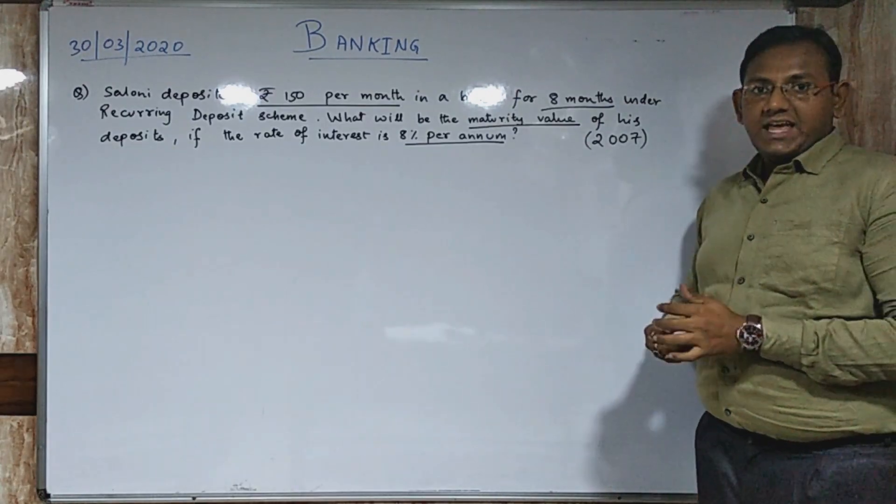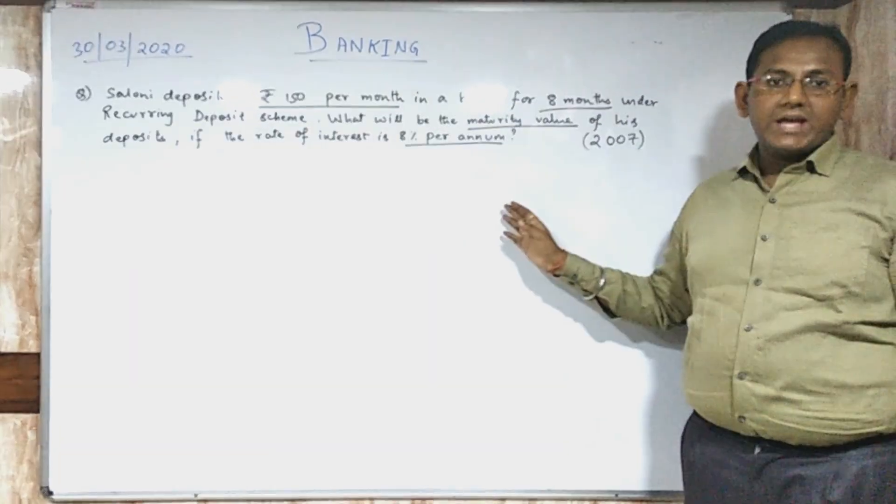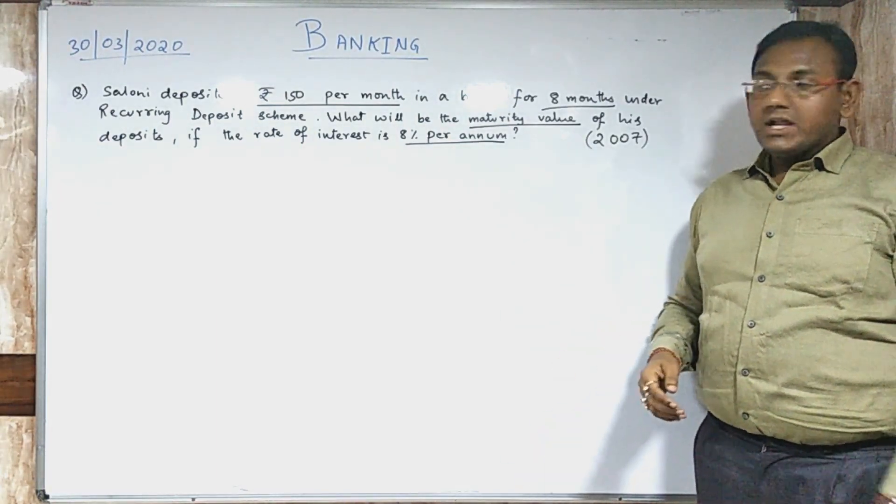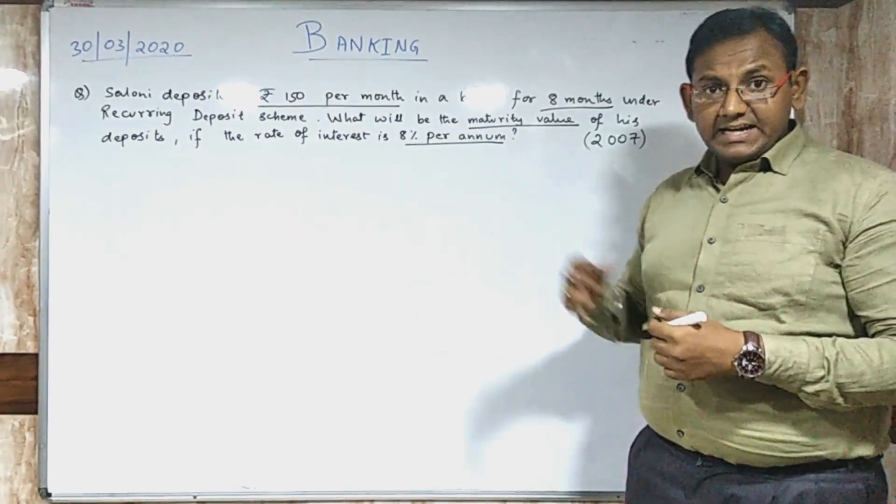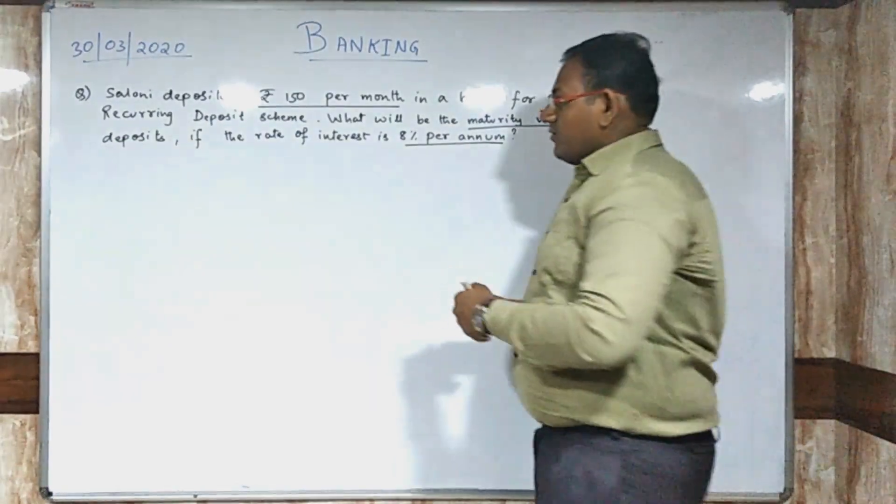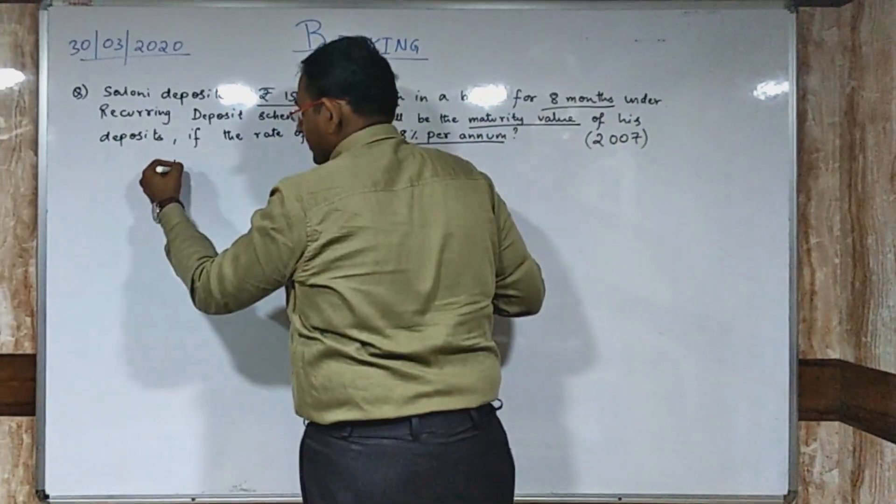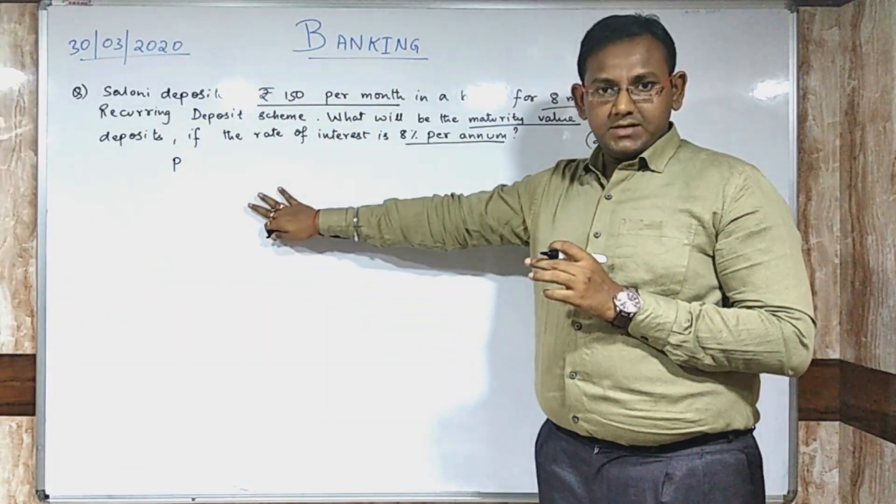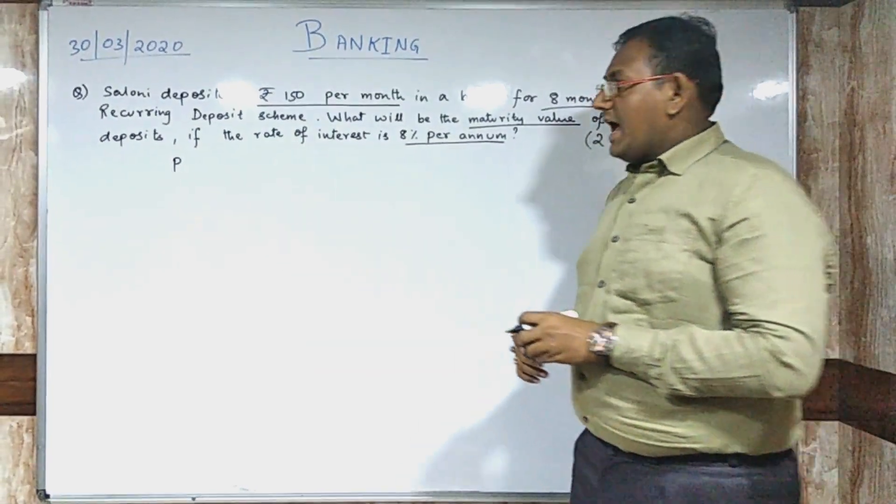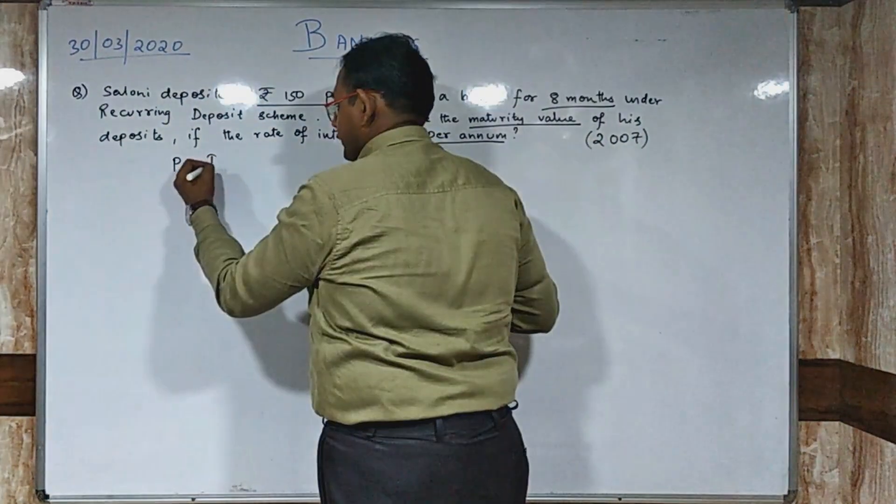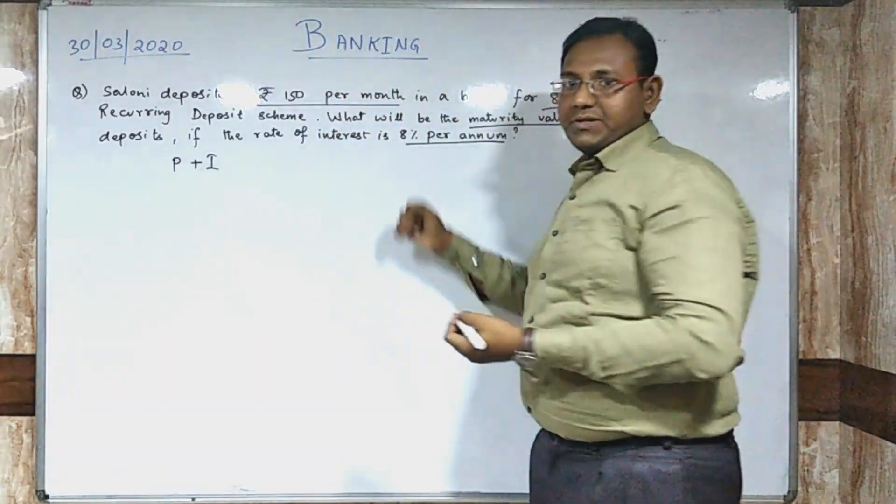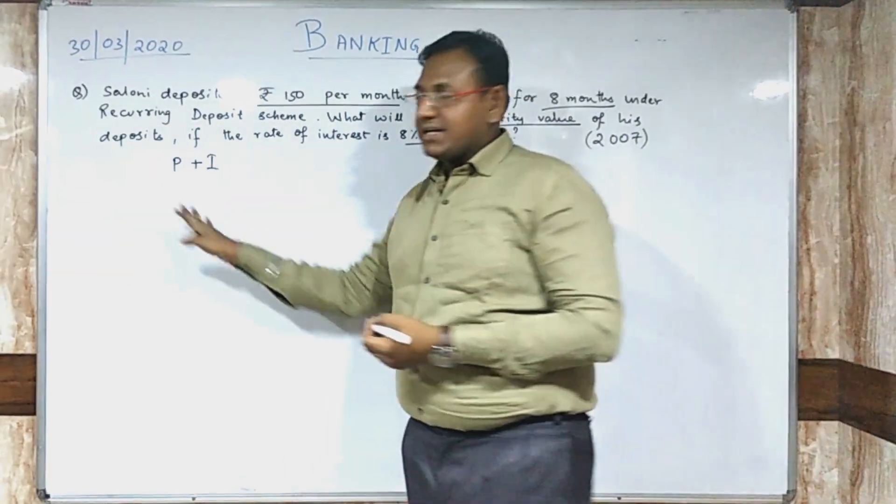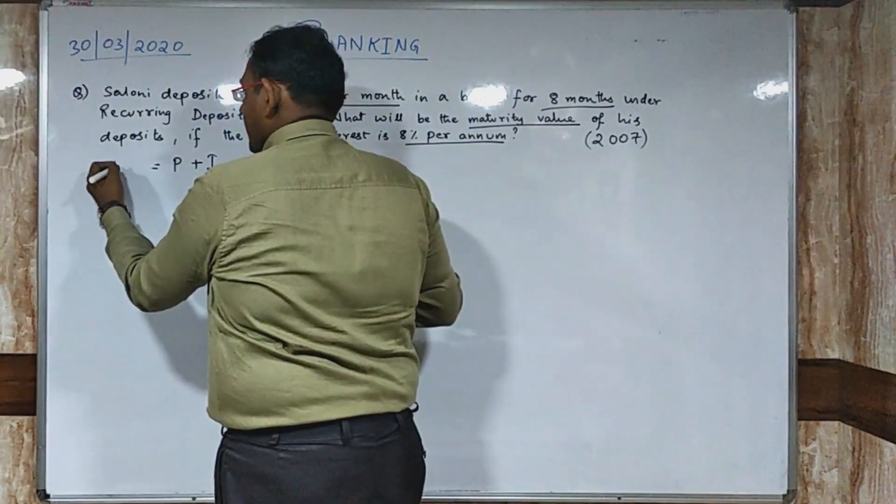In the previous lecture, you already understood how to calculate interest. But I haven't discussed anything about Maturity Value. What does the word Maturity Value mean? Let us understand that. Whenever we are giving some principle, depositing some money in a bank and getting some interest, if we add that - principle plus interest - we know from basic concepts that this is the amount.